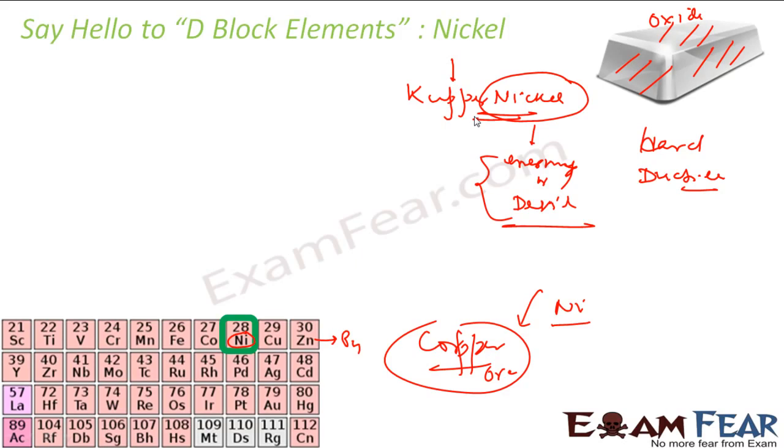And people were looking mostly for copper. Copper nickel, that was the name given. And then it became nickel. Nickel means enemy. So that's the history of nickel element.